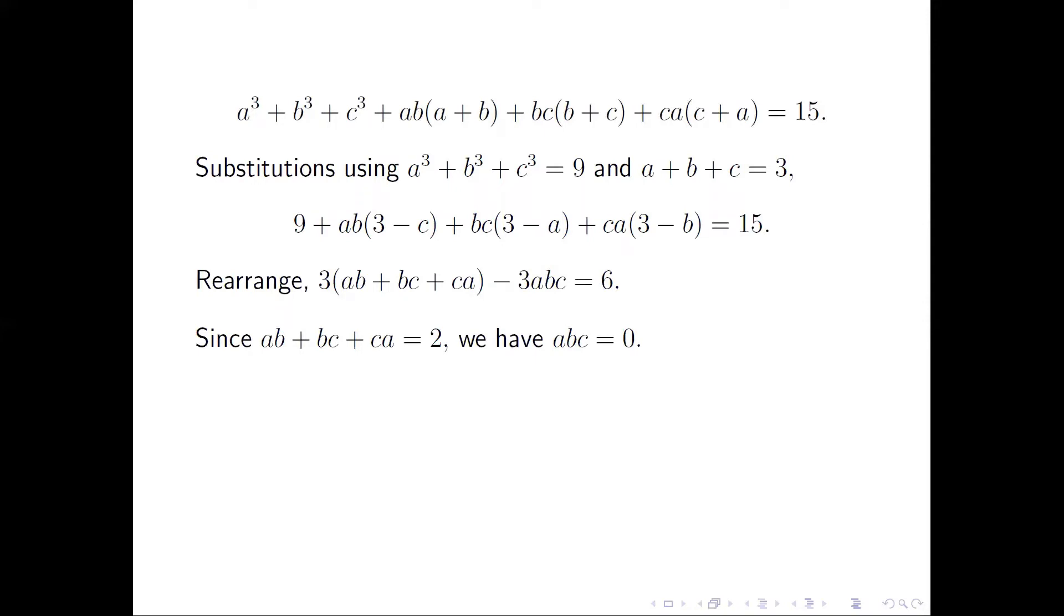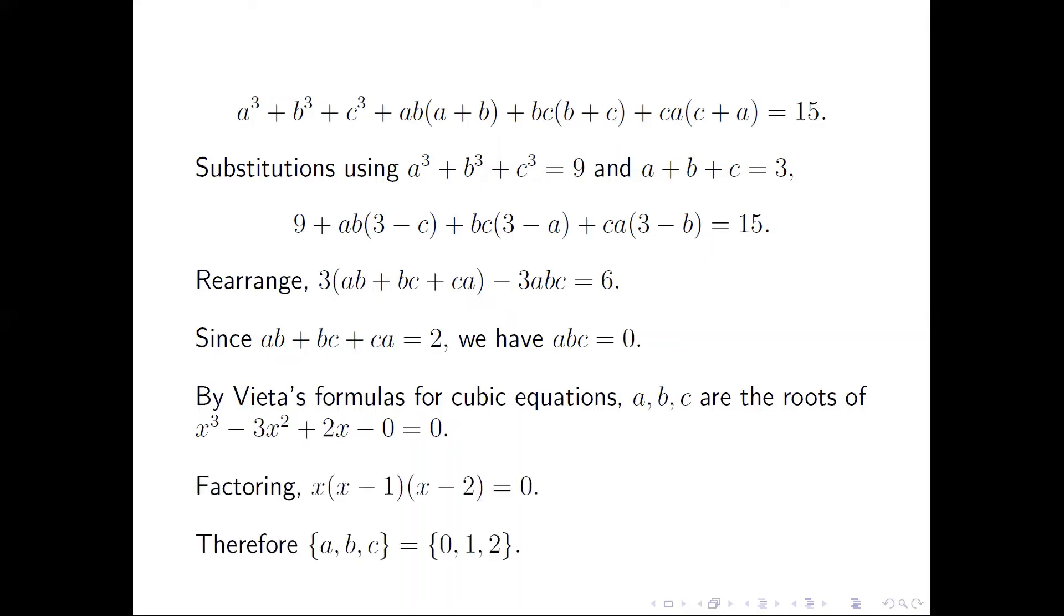As we just calculated, AB + BC + CA equals 2. Plugging it in, we have ABC equals 0. This is the last coefficient. By Vieta's formulas, A, B, and C are the roots of the cubic equation x³ - 3x² + 2x = 0. Factoring it, we get the solution: A, B, C equals 0, 1, 2, or any permutation.